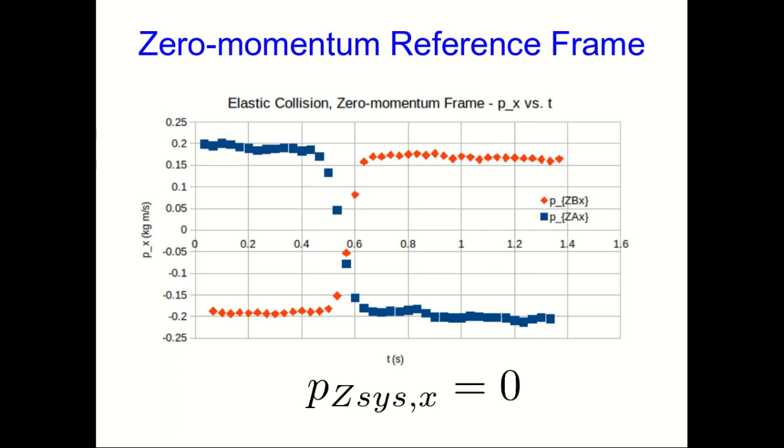So presumably there is some frame that we could choose where the graph would look like this, and the system momentum would be zero. Now, we don't know at the moment how fast the other moving cart with the camera on it would have to be moving for us to see this, but presumably such a frame exists. And it turns out to be useful, so now I'm going to work a problem to show you why it's useful.